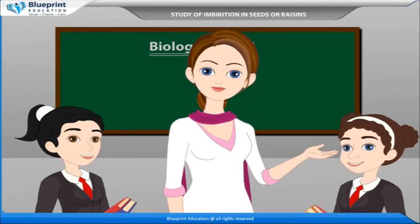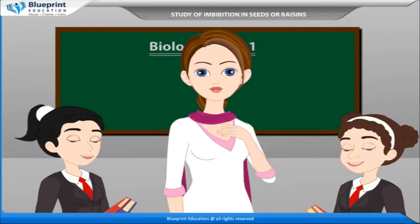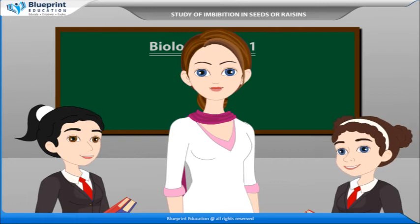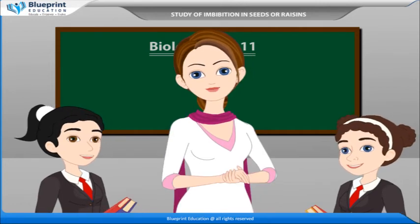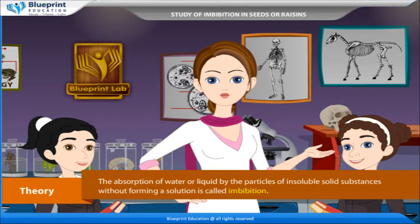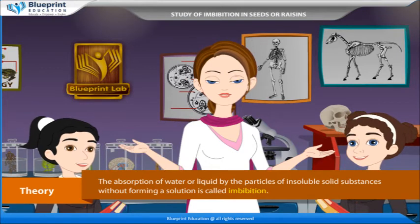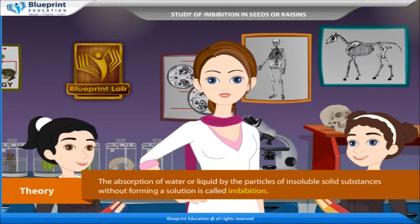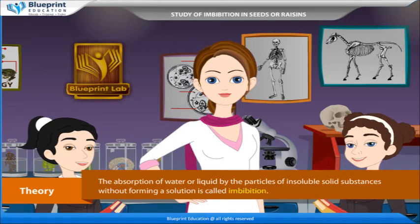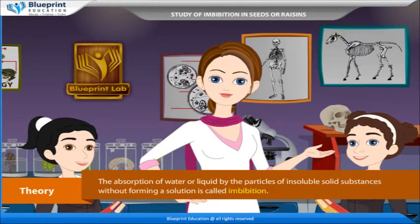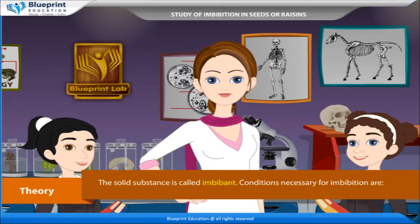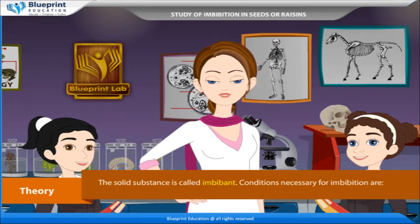Let us go to the lab. We will do an experiment to study imbibition in seeds and raisins. Theory: The absorption of water or liquid by the particles of insoluble solid substances without forming a solution is called imbibition. The solid substance is called the imbibant.